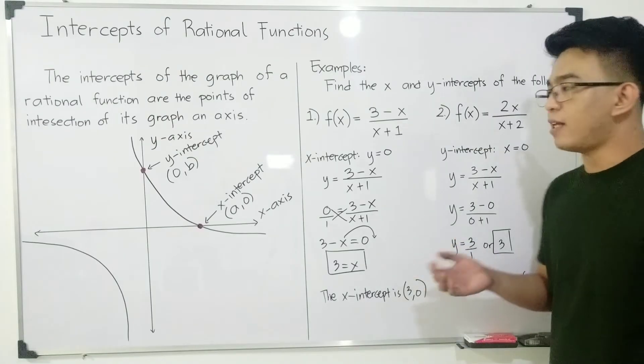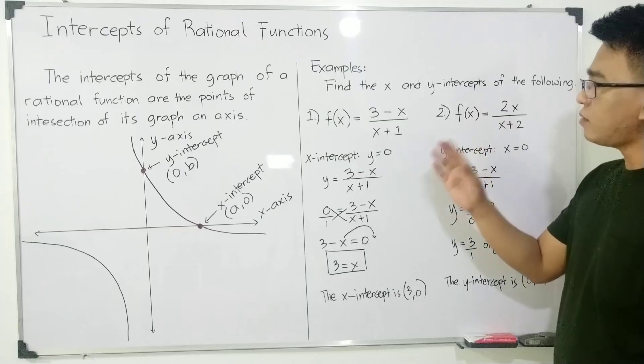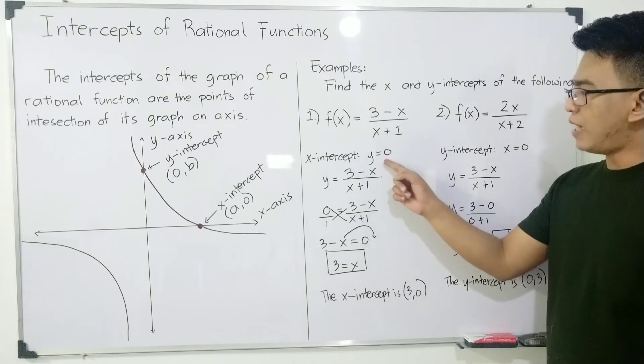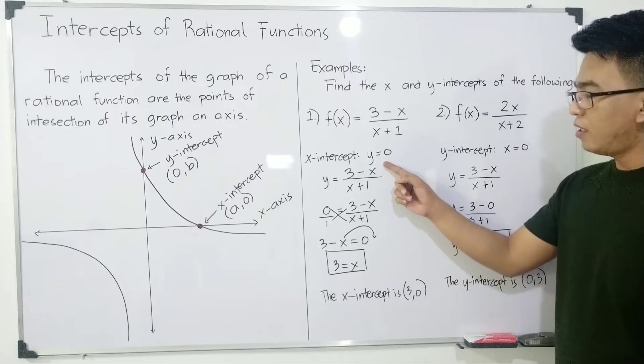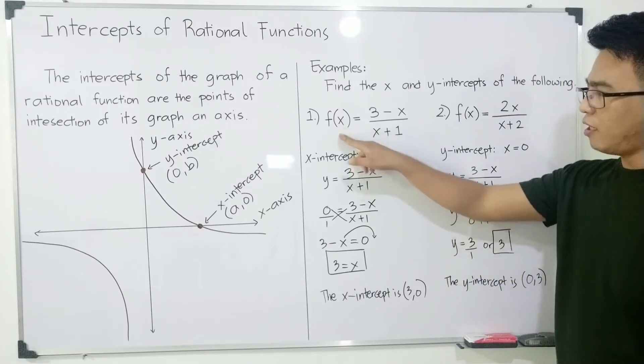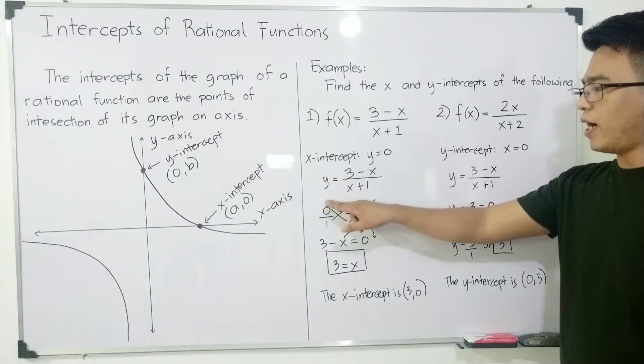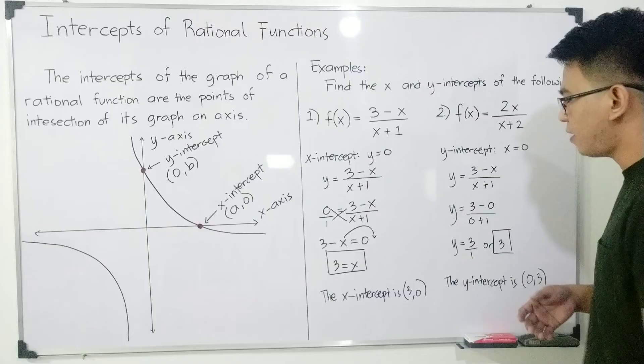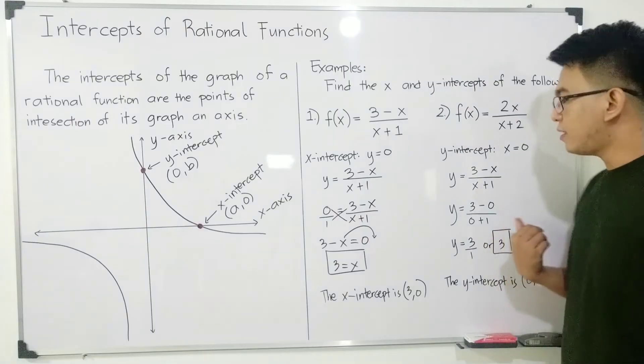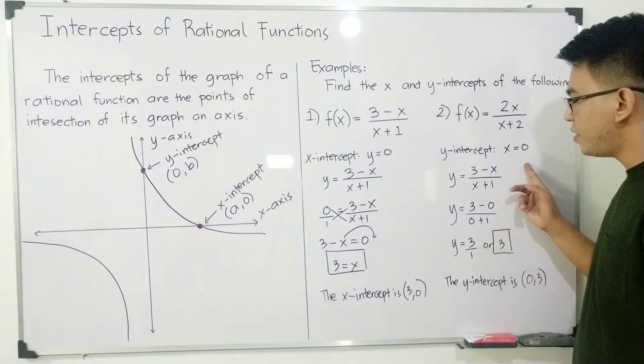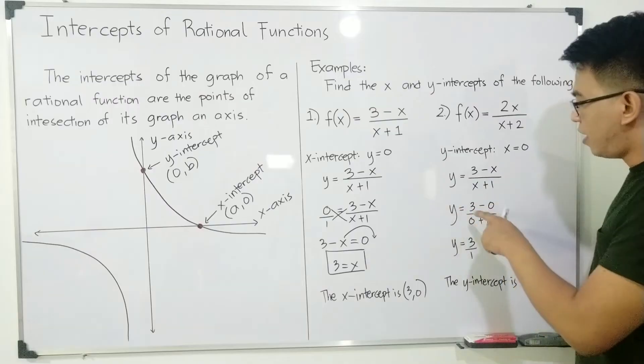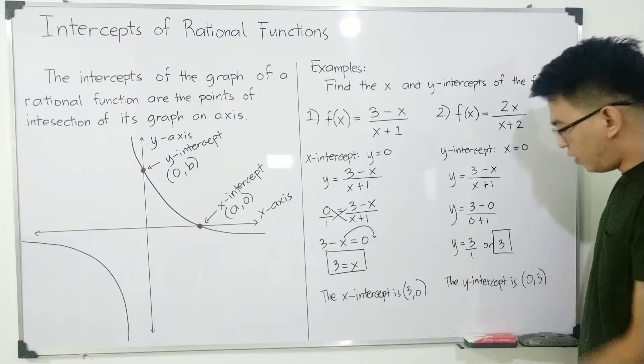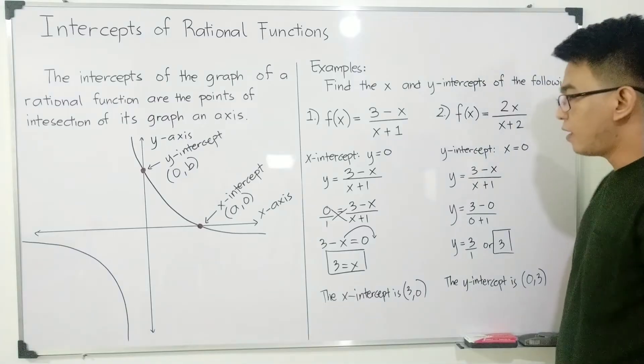I hope guys you understand our method. First, for the x-intercept, you will assign y equal to 0 and then change the f(x) by y and then replace the y variable by 0 and then solve for x. This is the actual x-intercept. As for the y-intercept, you will assign x equal to 0 and then you will solve for y and then there you have it. The y-intercept is equal to (0, 3).